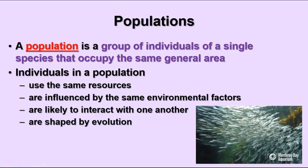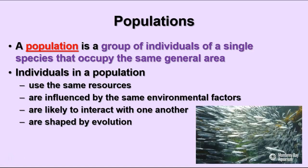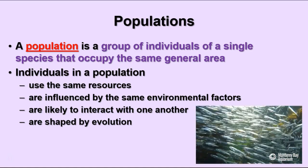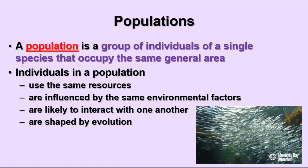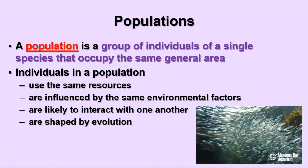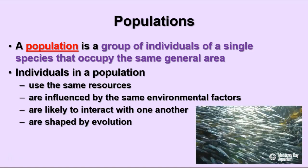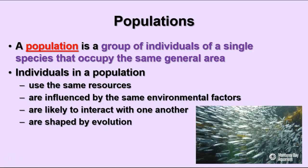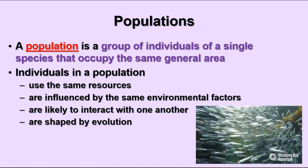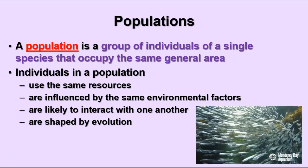Populations are groups of individuals of the same species that occupy a general area. They live somehow related to each other in terms of geographical distance. They use the same food, the same resources, the water sources, and all those kinds of things. They're influenced by the same environmental factors and often interact with each other. You can see in the picture that the school of fish definitely interacts with each other because they all move together as one body.